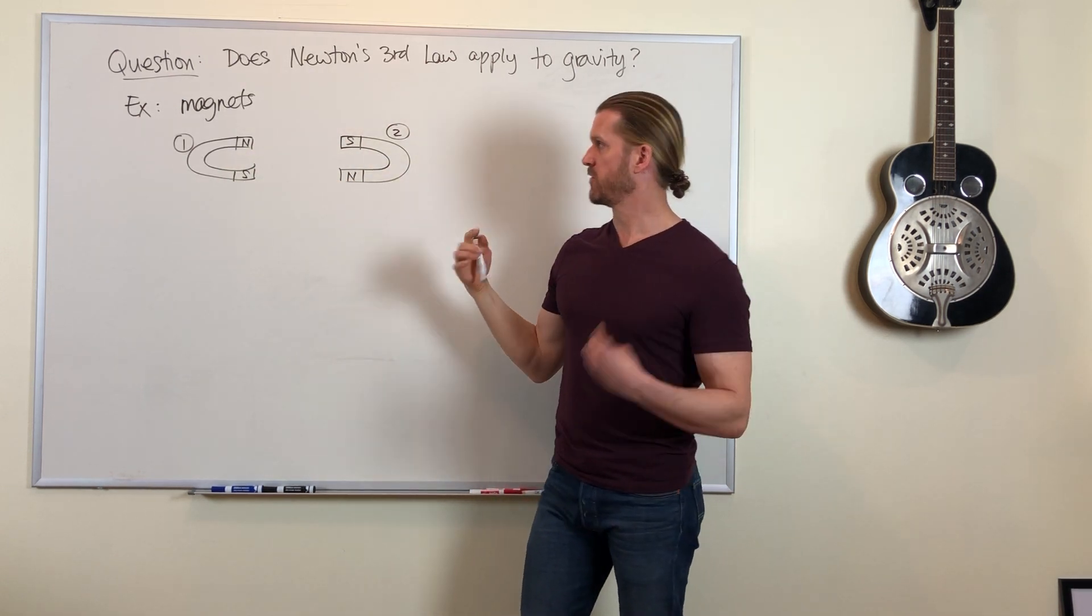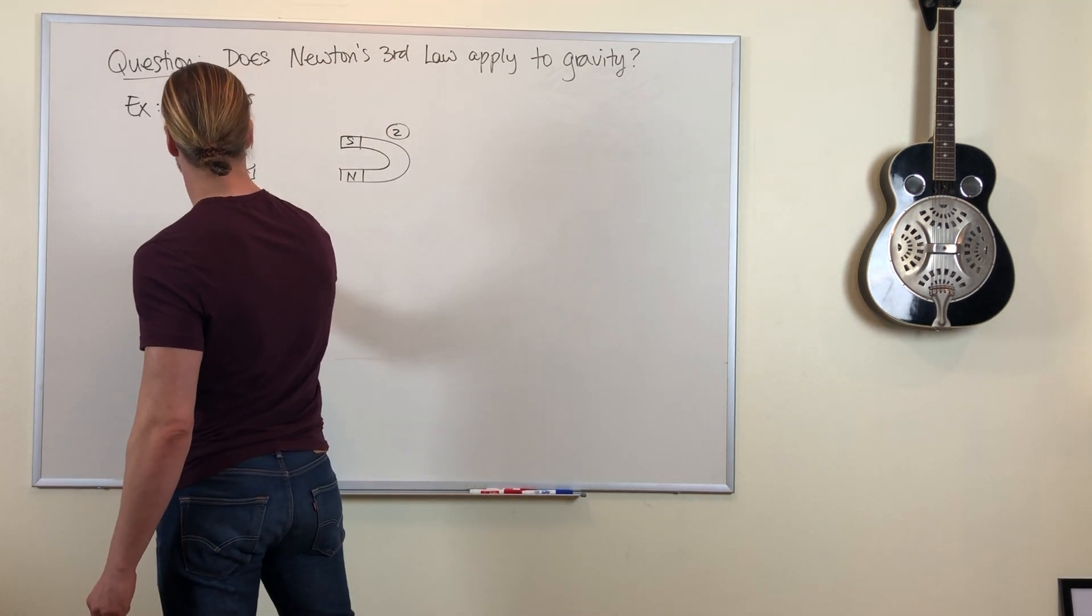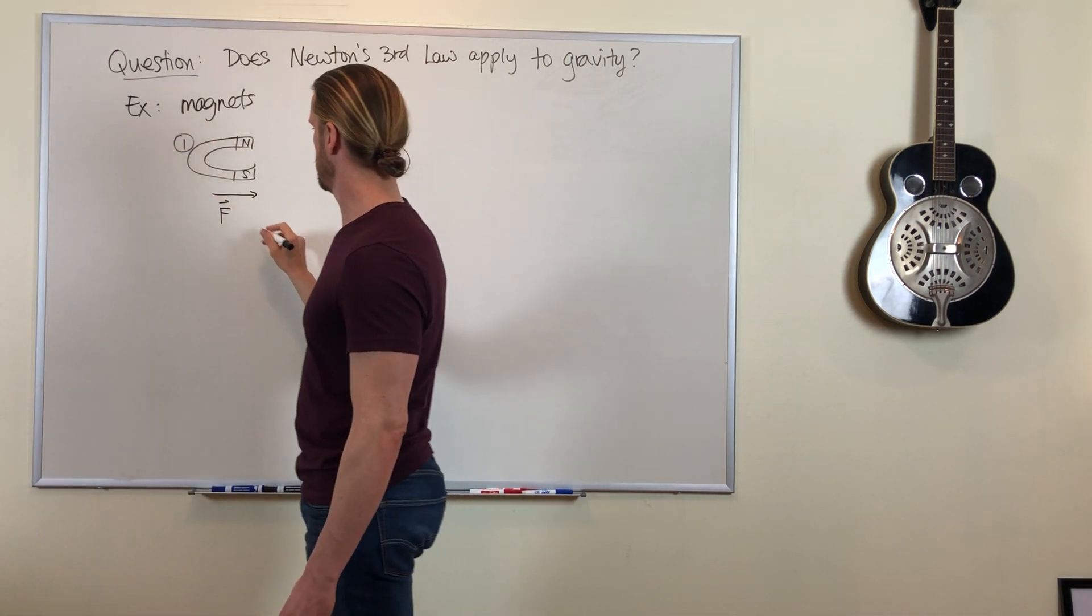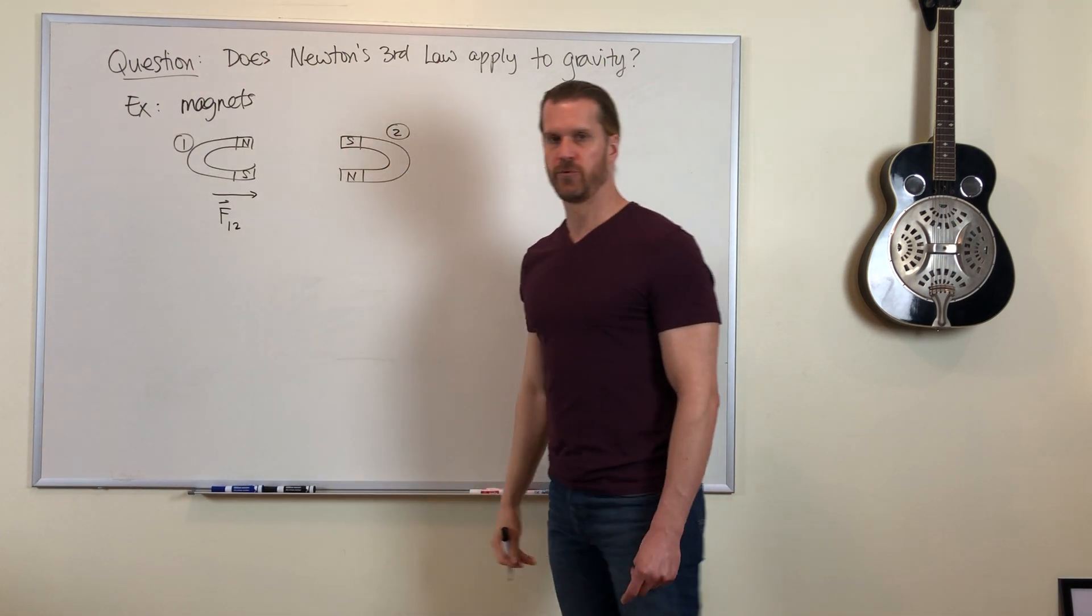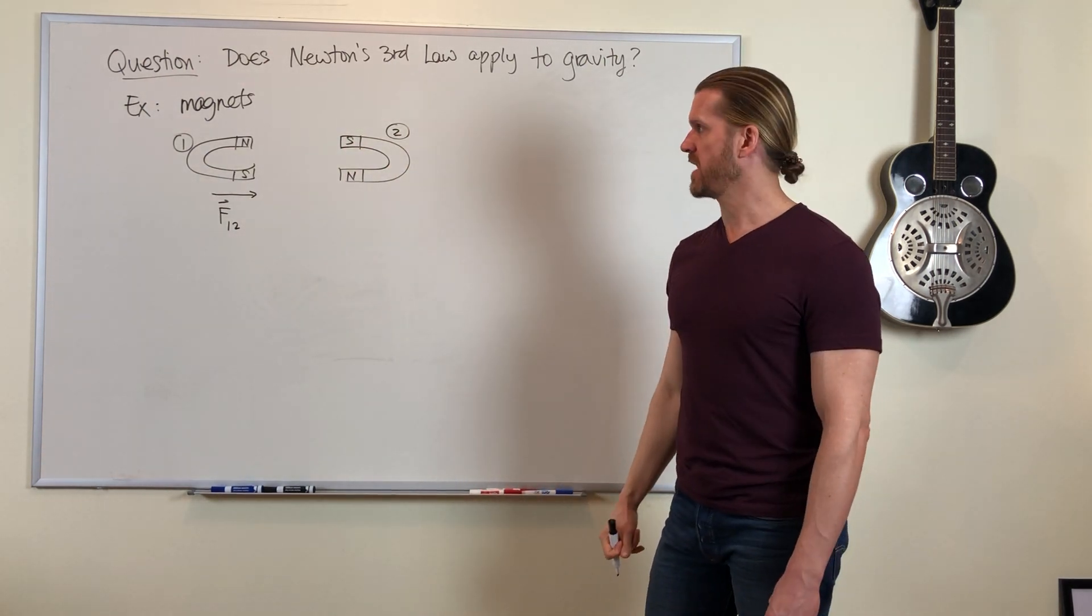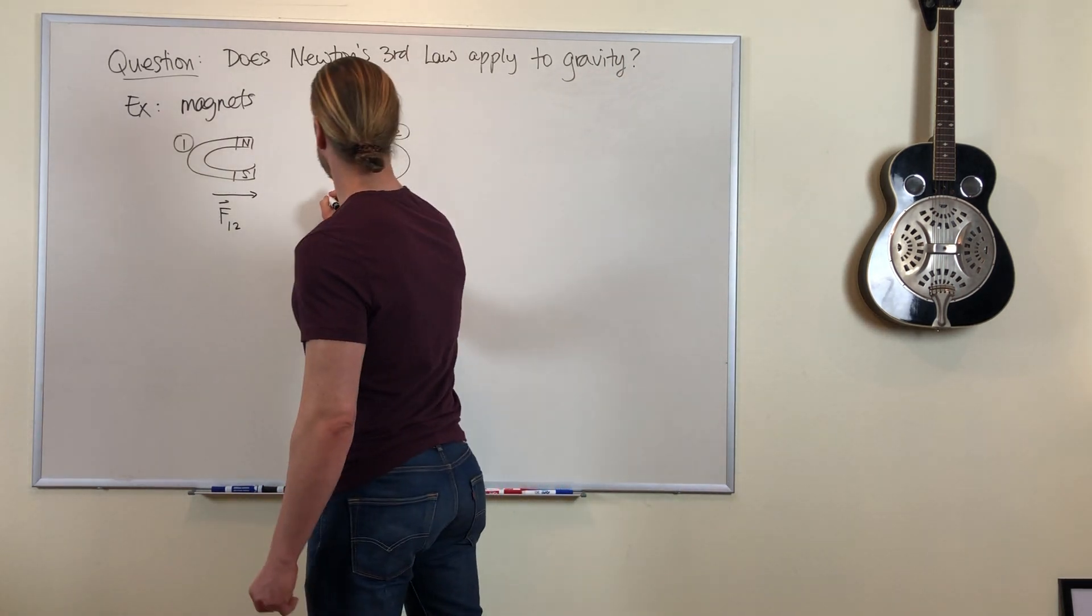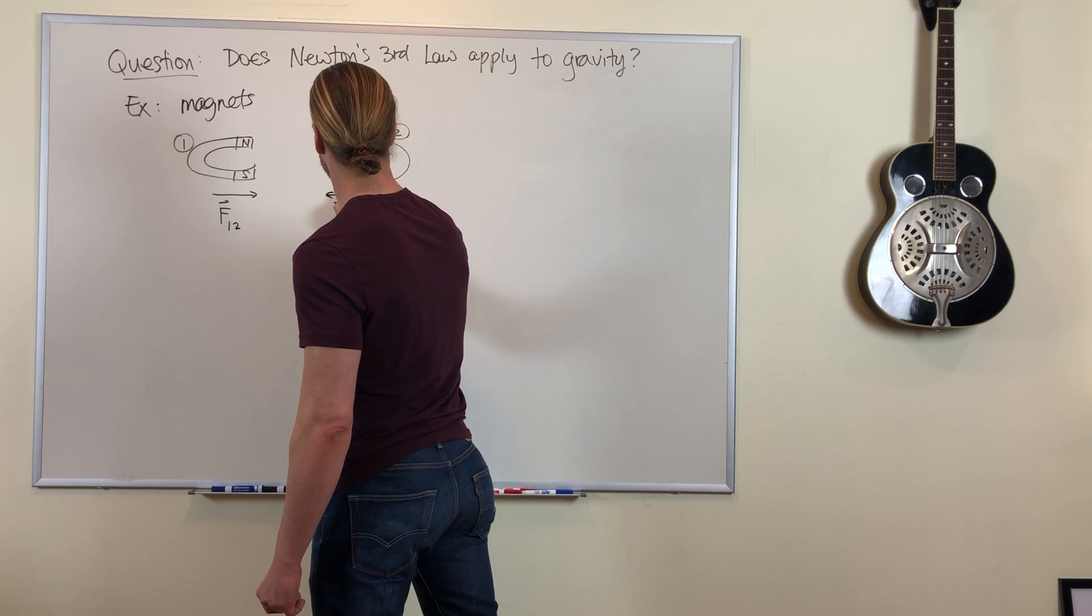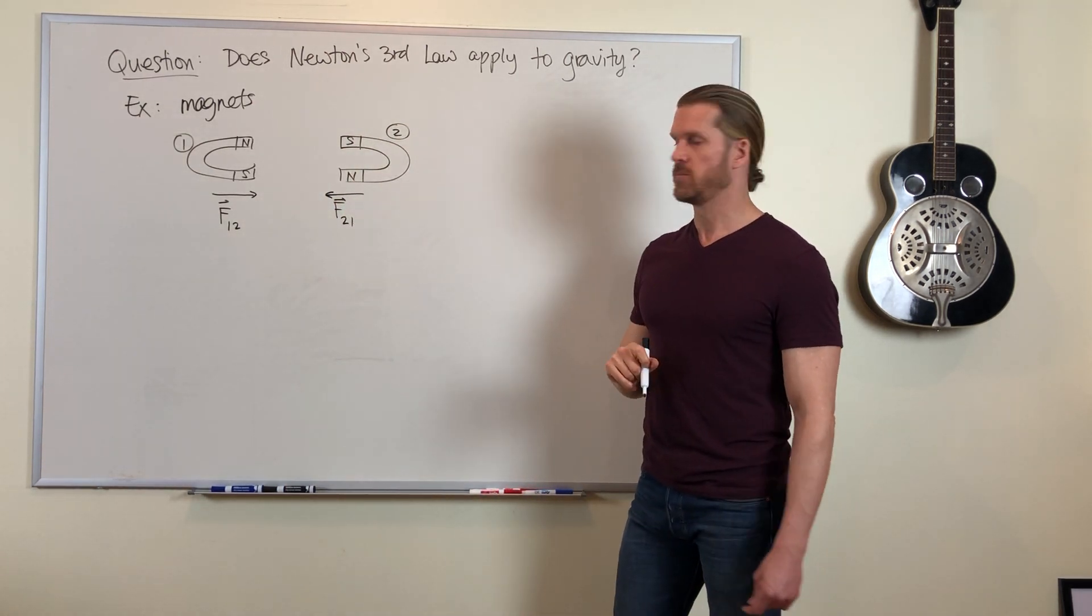So there's gonna be a force on magnet one due to magnet two pulling it. Similarly, there's a force on magnet two due to magnet one pulling on it.